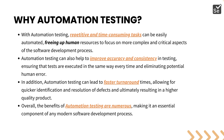Automation testing can also help improve accuracy and consistency in each and every iteration. As humans, we tend to lose patience doing the exact same work repeatedly and sometimes miss details during each iteration. But automation testing always does the exact same thing each time, providing consistent and accurate output. In addition, automation testing leads to faster turnaround time because a computer program testing another computer program is inherently faster every time.